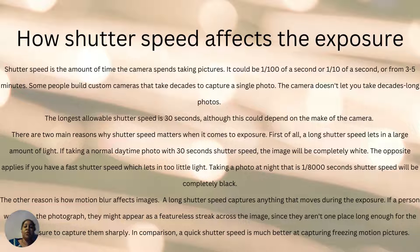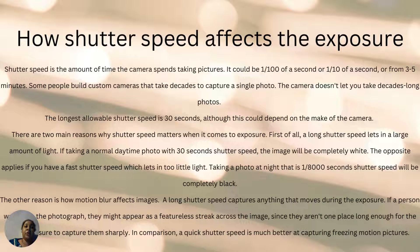The other reason is that motion blur affects images. A long shutter speed captures anything that moves during the exposure, so if a person is walking into the photograph they may appear as a featureless streak across the image. Motion blur is basically when someone is moving in the photo and you have a long shutter speed. You see a blurry figure of a person blending into the background with the environment around them.